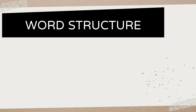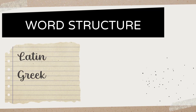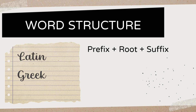First of all, before we actually talk about the terminology, we need to talk about word structure. The proper name for that is actually called etymology, but we're just going to stick with word structure. The reason we're going to learn that is because the majority of our scientific terminology actually comes from Latin and Greek origins. So usually when we put those words together, we have something like a formula: a prefix, a root, and a suffix.